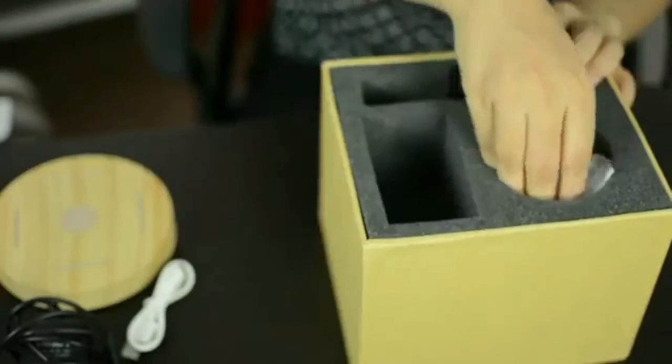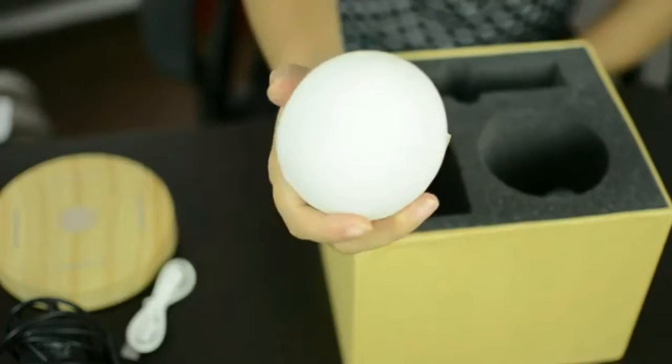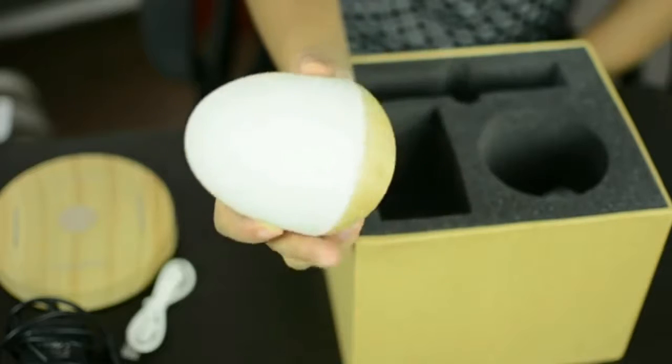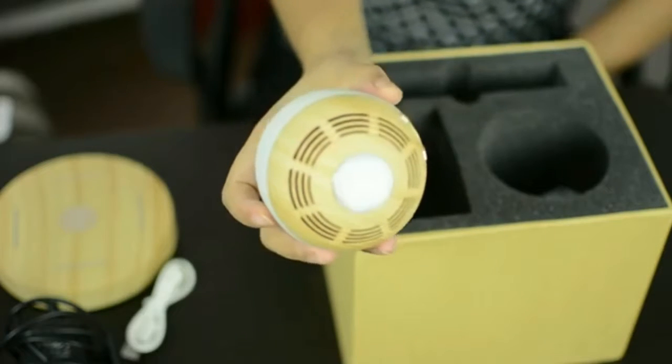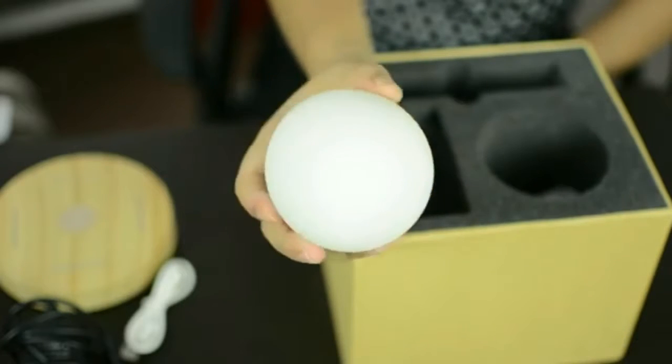And finally, this is the Bluetooth speaker. It looks like an ostrich-shaped egg. The bottom looks nice and it has a wooden finish. The top is soft and rubbery and I guess it glows.